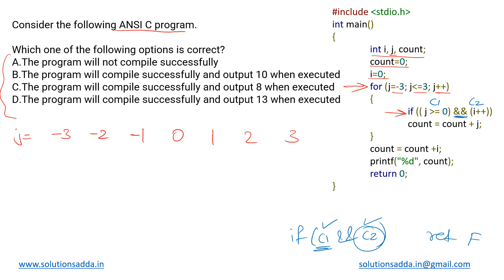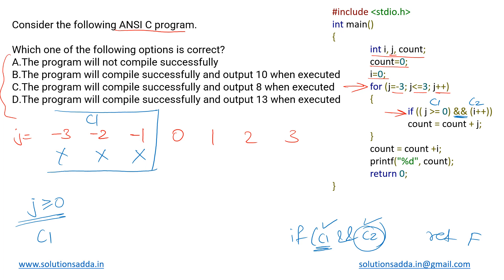First we check condition c1: j greater than or equal to zero. This first condition c1 fails for the three negative values of j, so we check only c1 and it fails — we do not check c2. Those three iterations of the for loop are simply wasted.